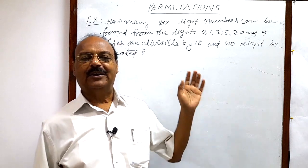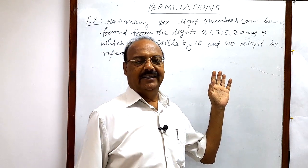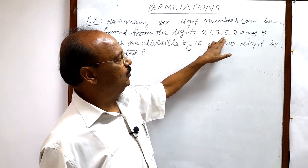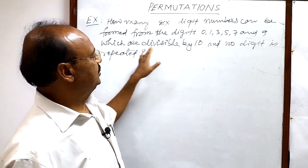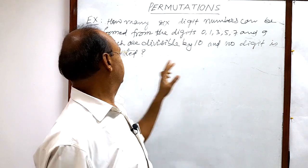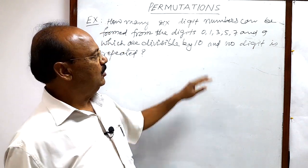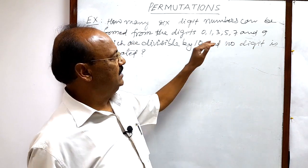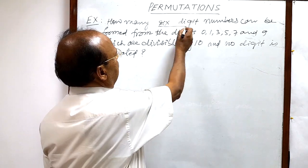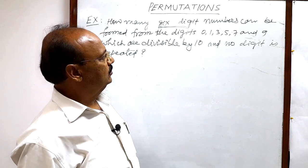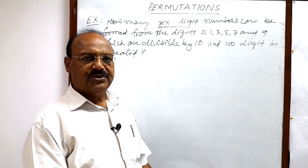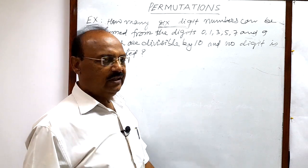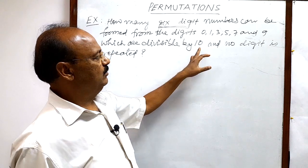Welcome students, let us see a problem from the topic permutations. Here the question is: how many six-digit numbers can be formed from the digits 0, 1, 3, 5, 7, and 9 which are divisible by 10 and no digit is repeated? The total number of digits given is 1, 2, 3, 4, 5, 6. Out of these six digits we have to form a six-digit number, so all the digits will be used once because no digit is repeated, and we have to take care that these numbers should be divisible by 10.